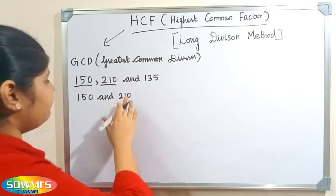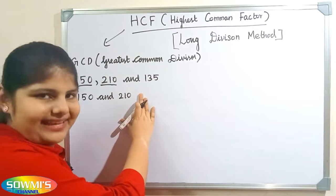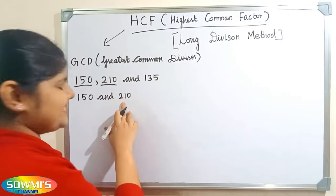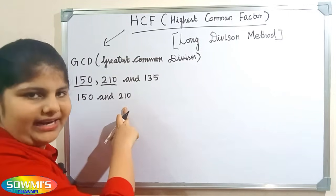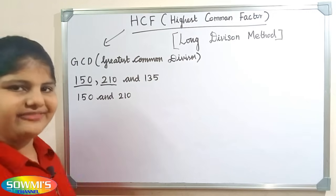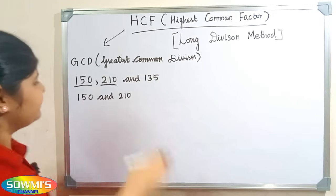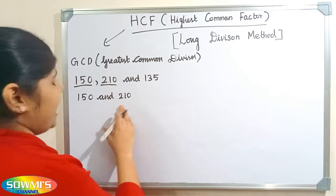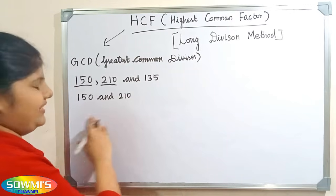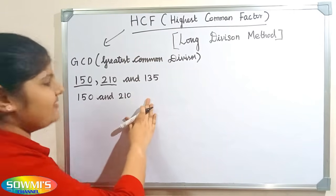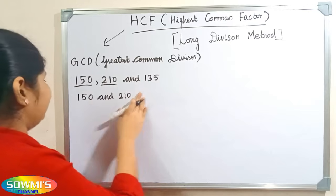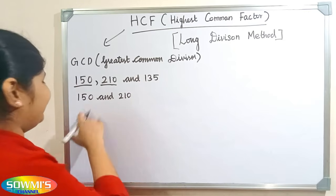Now we have to find which is the greatest and the smallest number. Here the greatest number is 210 and the smallest number is 150. Now we have to divide the greatest number by the smallest number, that is we have to divide 210 by 150.